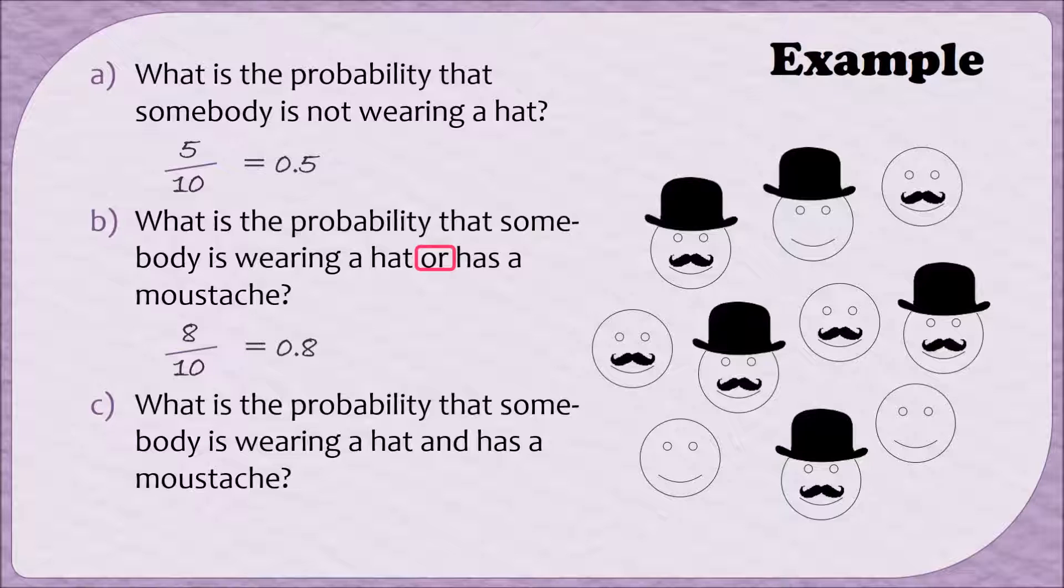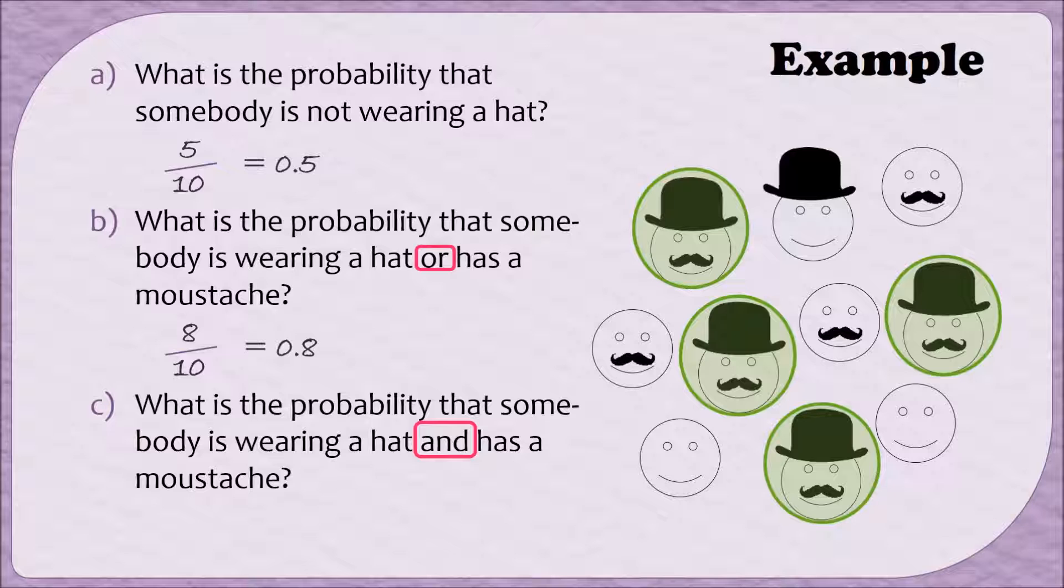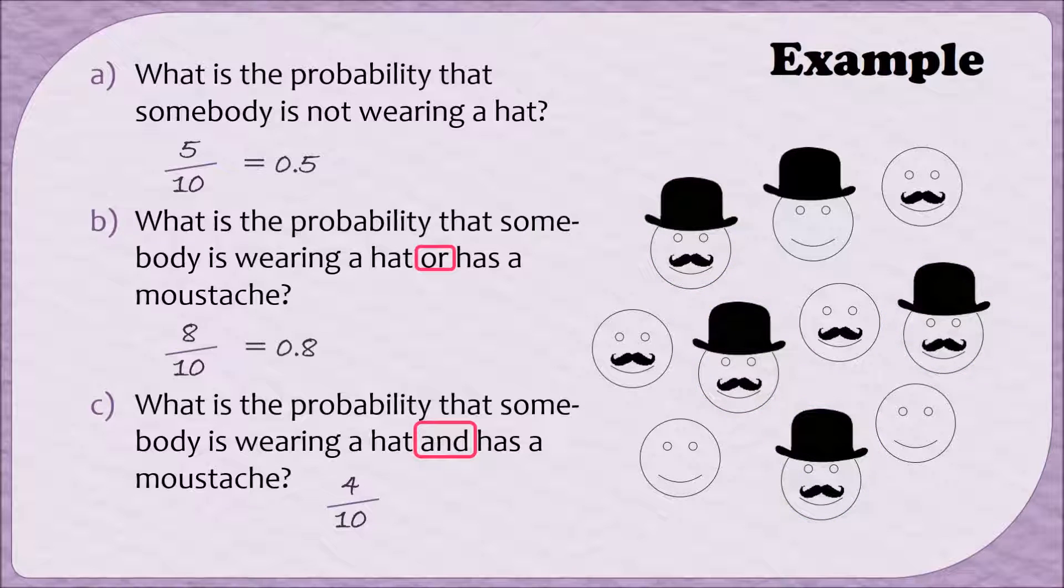Lastly, let's determine the probability that somebody is wearing a hat AND has a mustache. In this case, when we go to count up the people, since the connecting word is AND, we need to make sure that they fit both groups, that they are wearing a hat AND that they have a mustache. In this case, there are 4 individuals, so that becomes our numerator, and when we divide that by 10, the total number of people, we end up with a probability of 0.4.